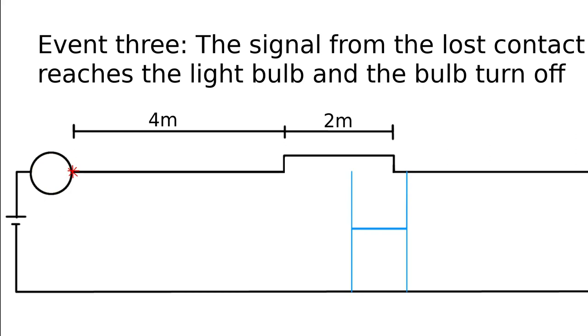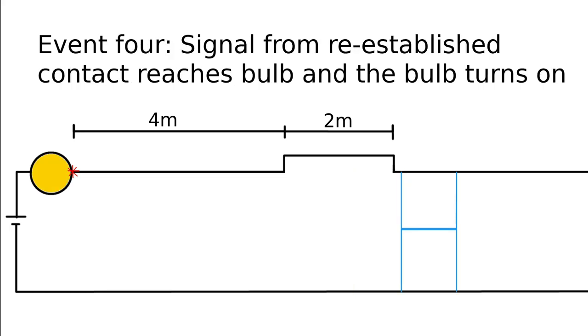Event 3 is when the signal that contact has been lost reaches the light bulb. This is when the light turns off. Event 4 is when the signal that the contact has been gained reaches the light bulb. This is when the light bulb turns back on.